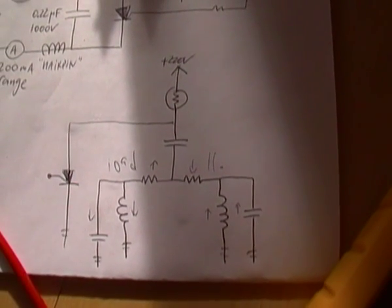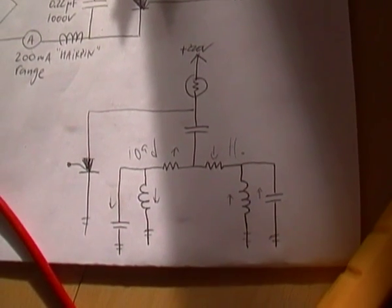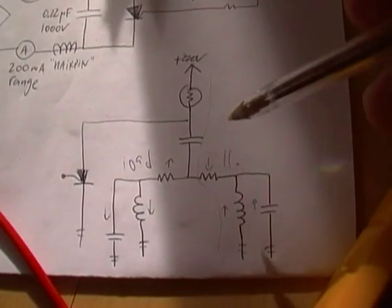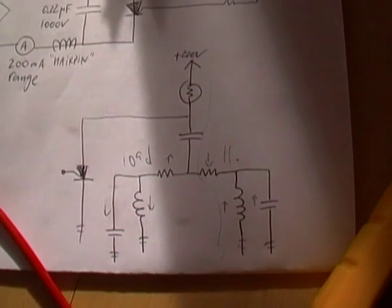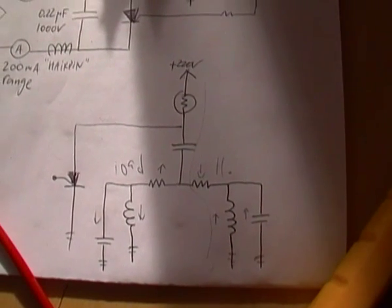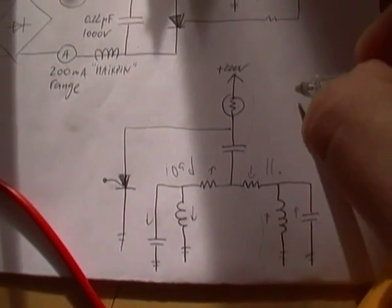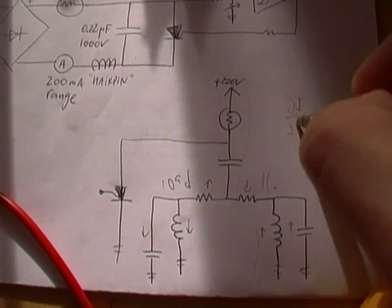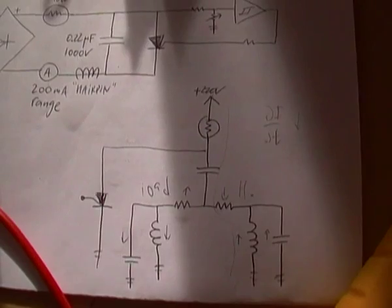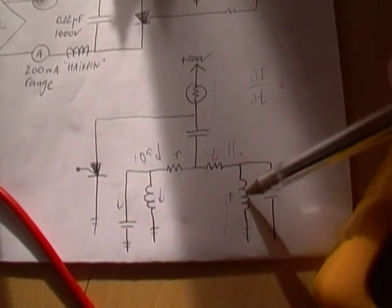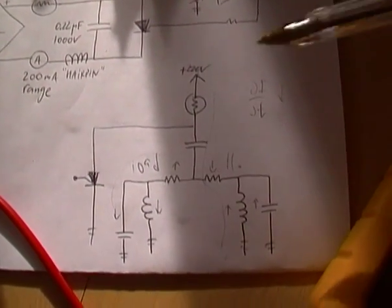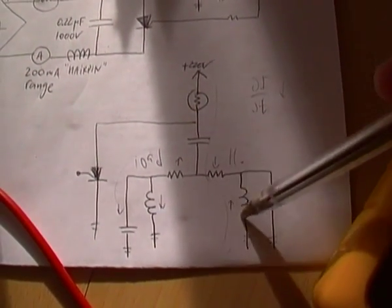During the charge cycle of the capacitor, the current flows like this through the hairpin, and it's low speed, the current. The DI-DT characteristic of it is relatively low. So, the impedance of hairpin is much lower than the impedance of the load. So, the current flows through the hairpin.